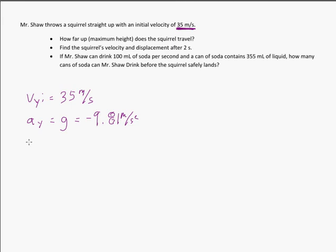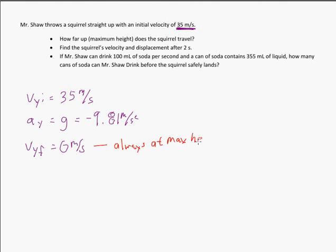At maximum height, your velocity is zero — VYF equals 0 meters per second. This is very important. This is always going to happen at max height. Whenever you think maximum height of an object traveling upward, you think your VYF is going to be 0 at that point.